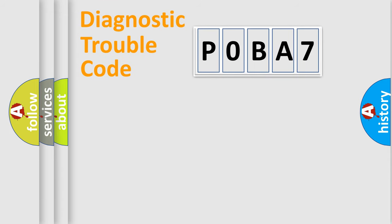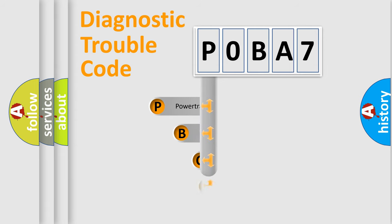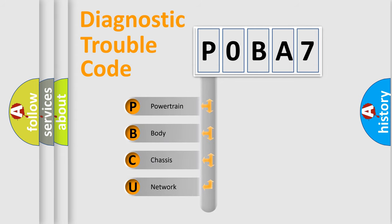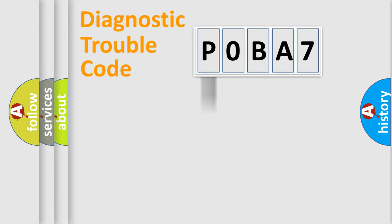First, let's look at the history of diagnostic fault code composition according to the OBD2 protocol, which is unified for all automakers since 2000. We divide the electric system of an automobile into four basic units: Powertrain, Body, Chassis, and Network. This distribution is defined in the first character of the code.